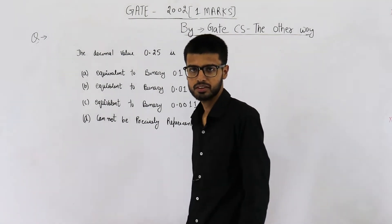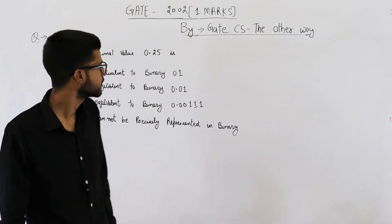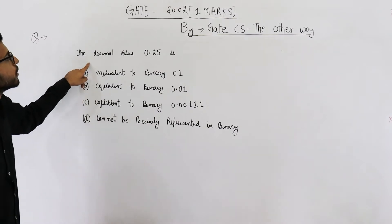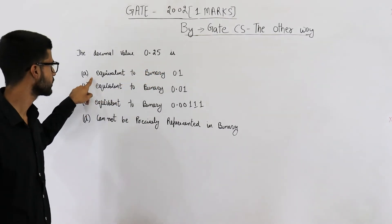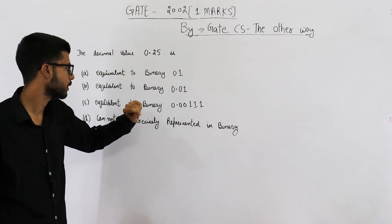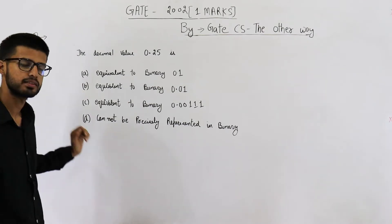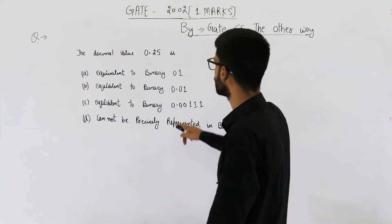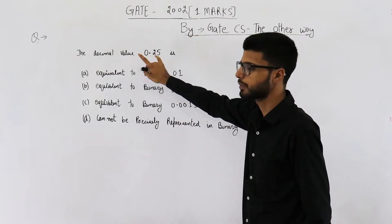Hello students, welcome back. The question is from GATE 2002. It says the decimal value 0.25 is option A equivalent to binary 0.1. Similarly, you have these three more options. Now we need to find what is the binary representation of 0.25.